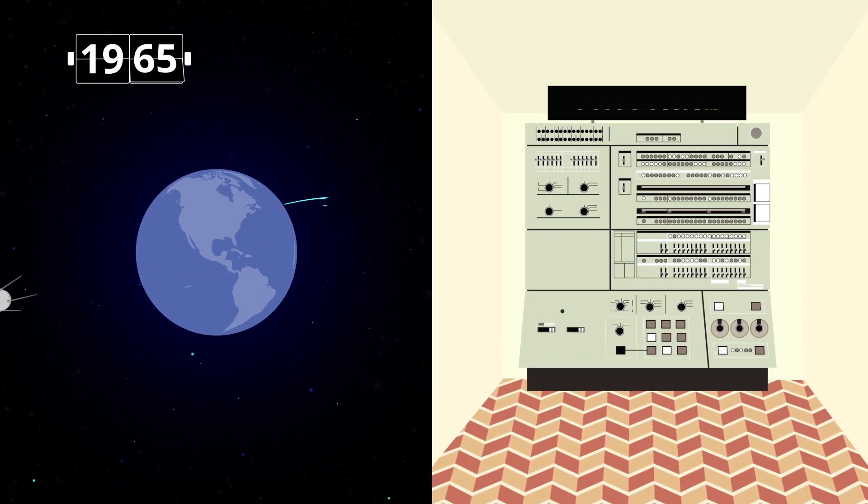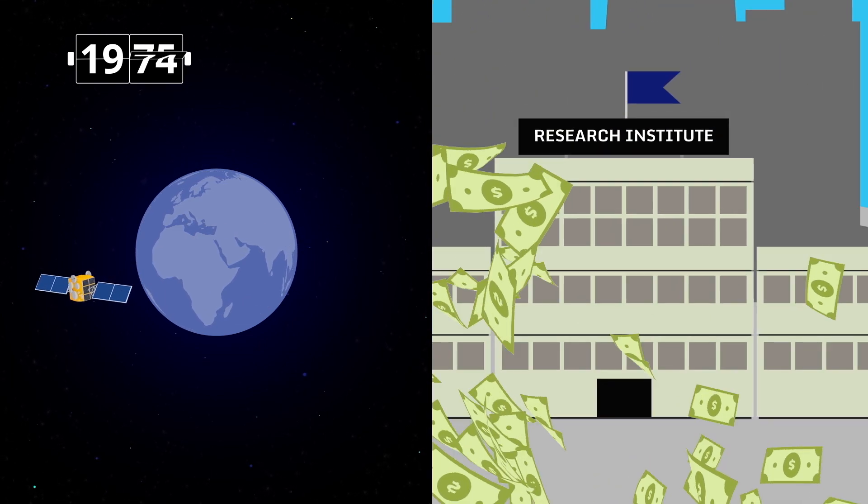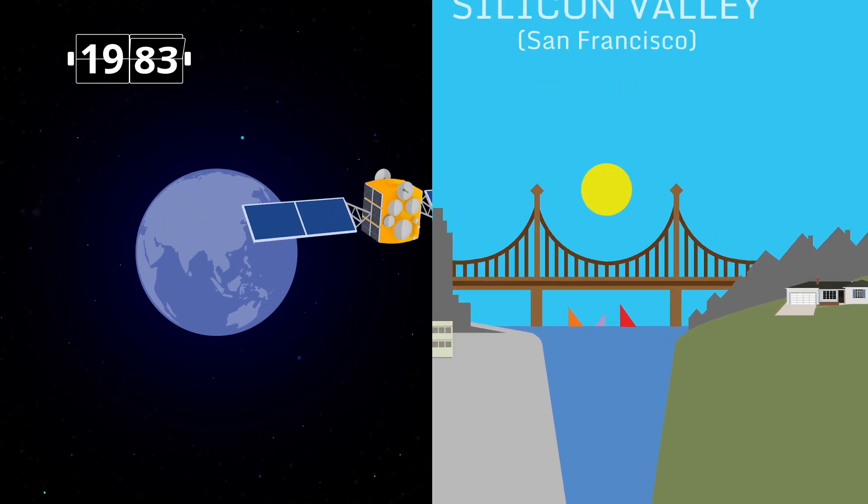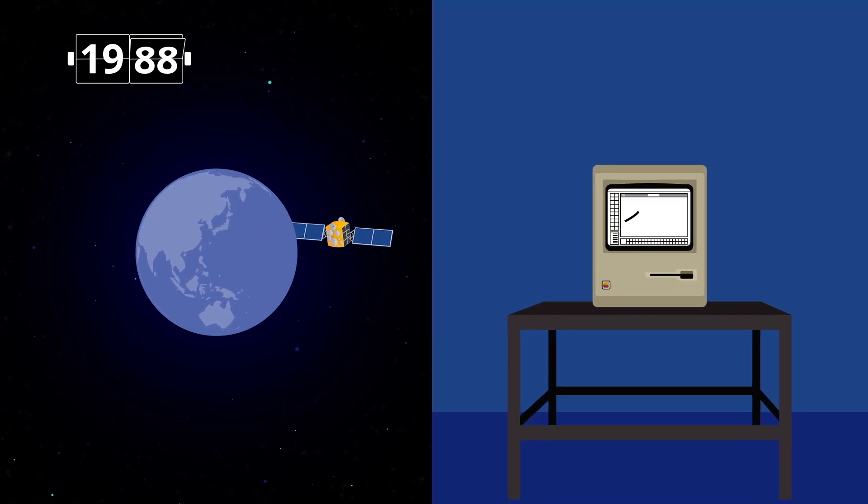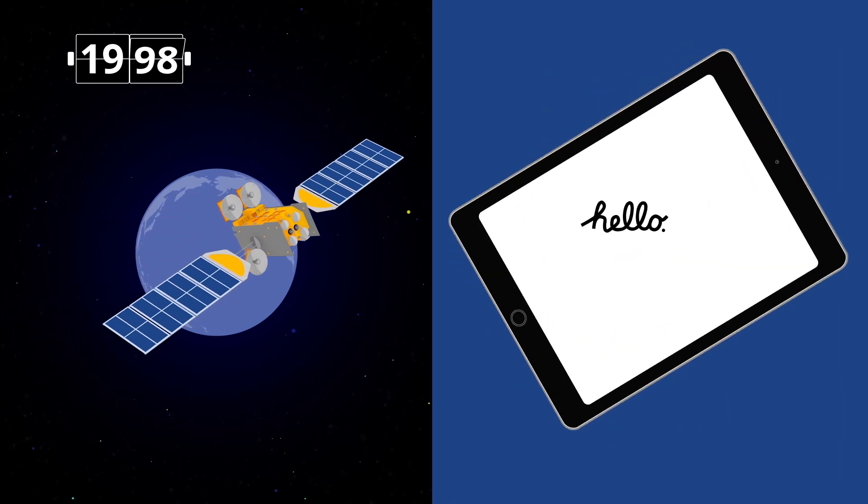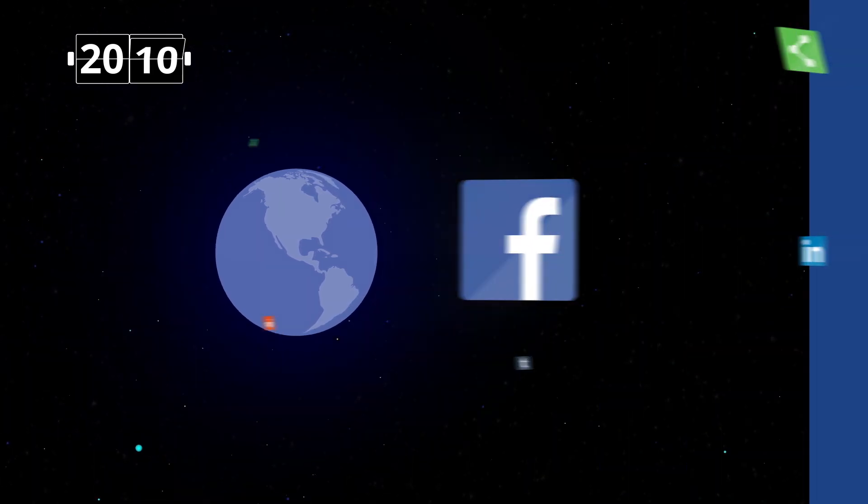Back in the 60s, a computer would fill a whole room, cost millions and be only available to a few research institutions in the world. That changed when some entrepreneurs at Silicon Valley decided to make those computers small and affordable. The rest is history and we now have computers in the palm of our hands, the internet, Google, Facebook and a whole world of apps.